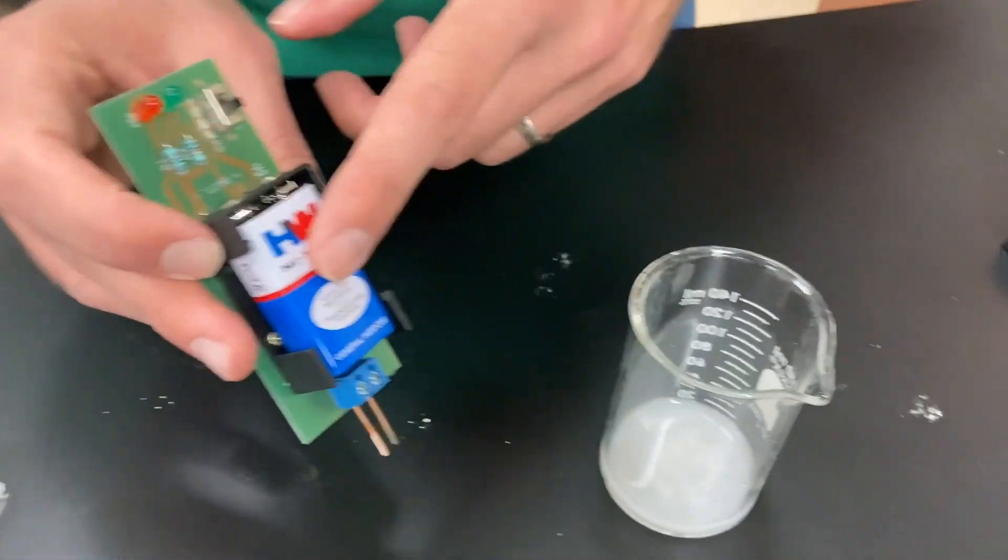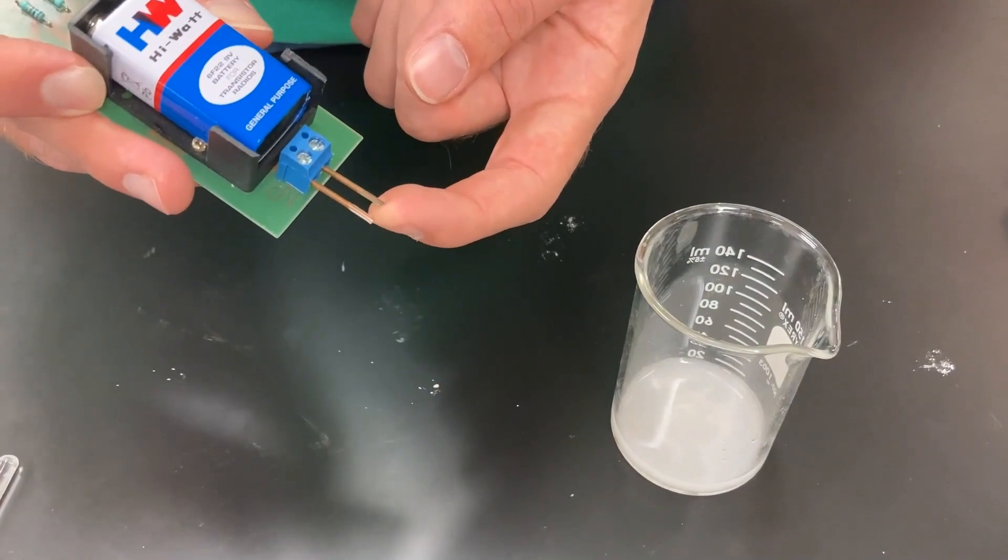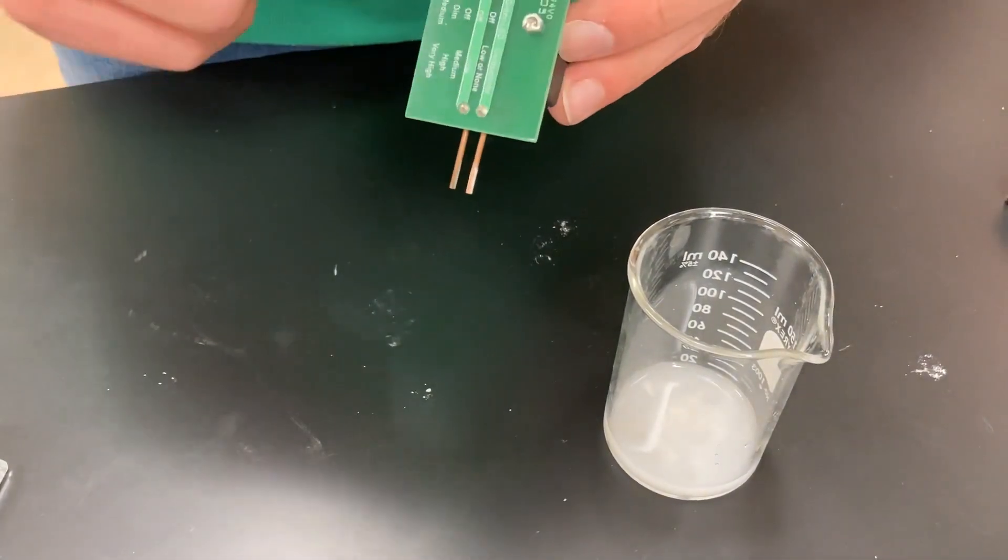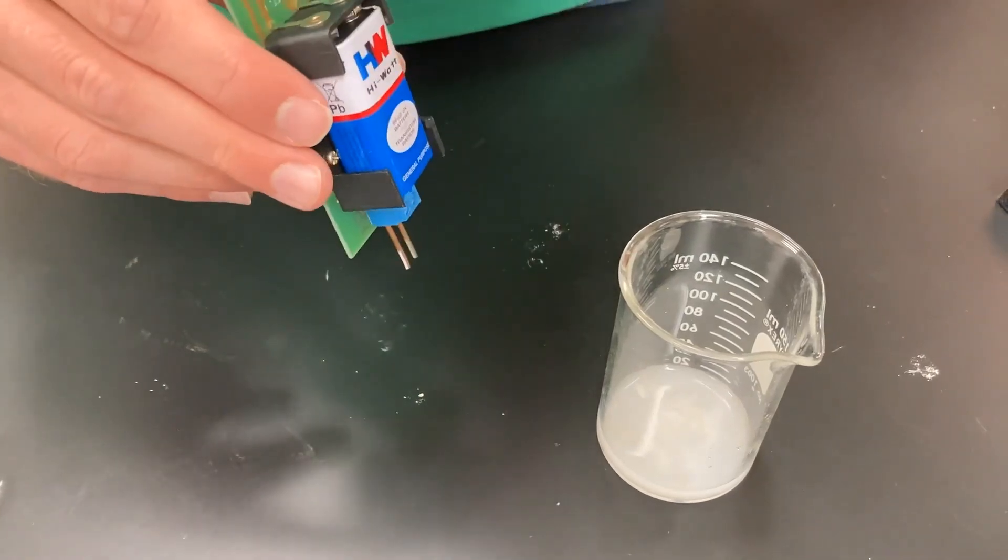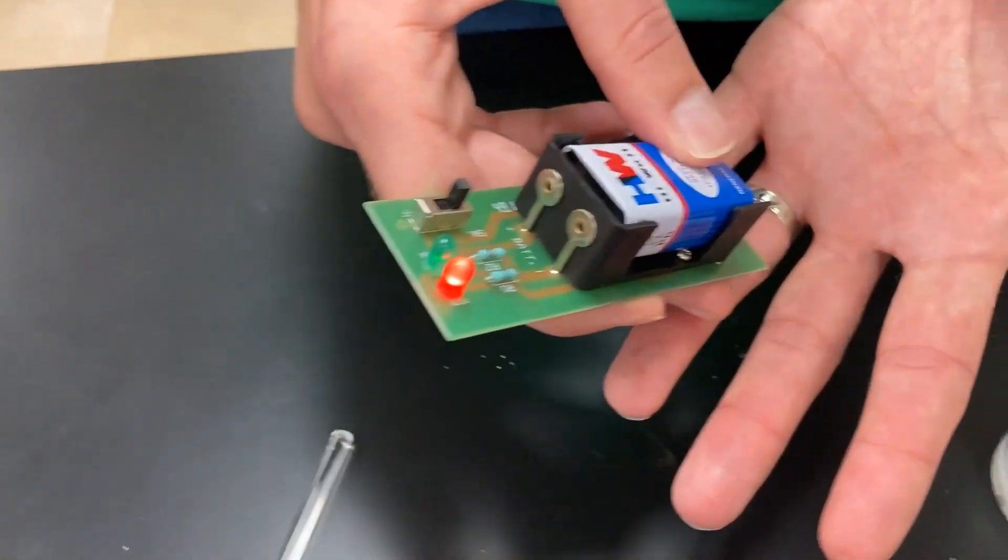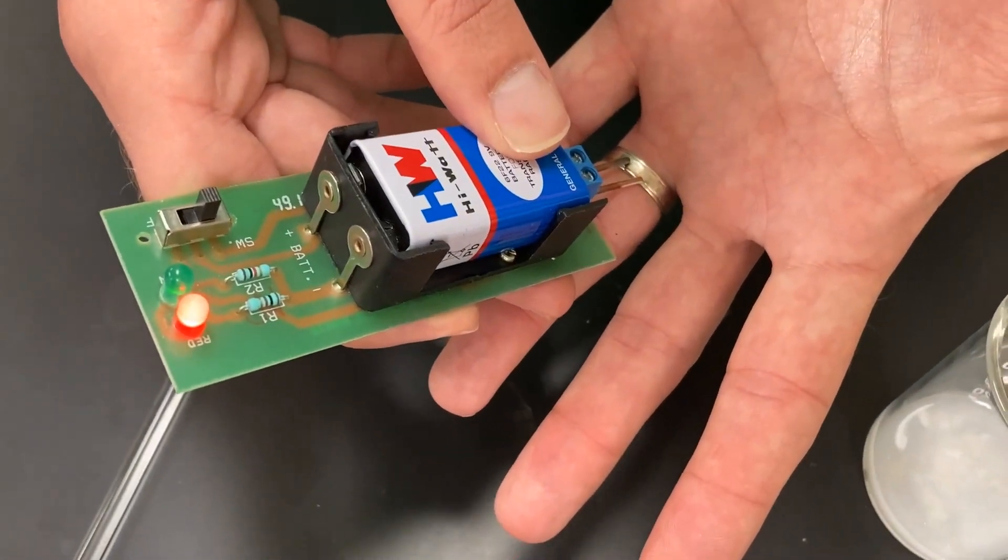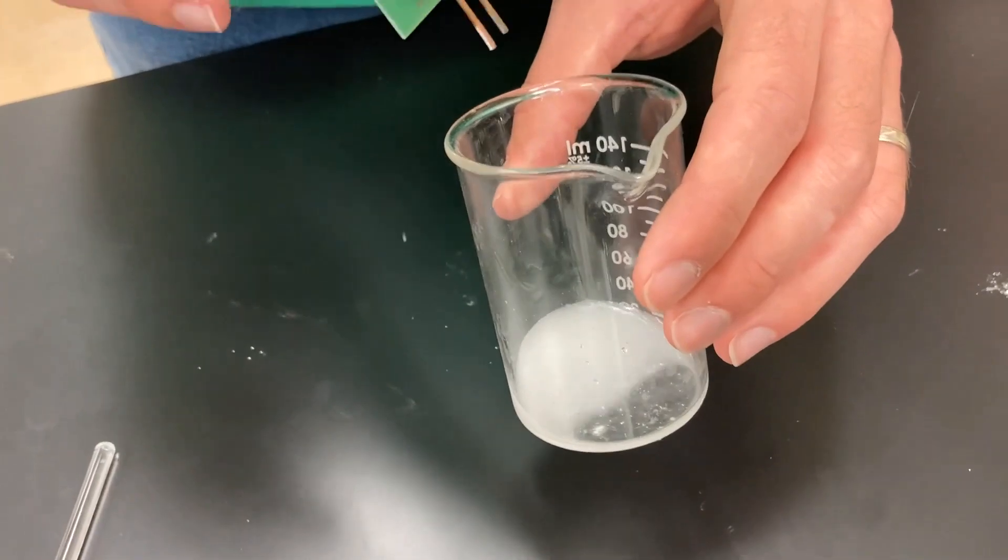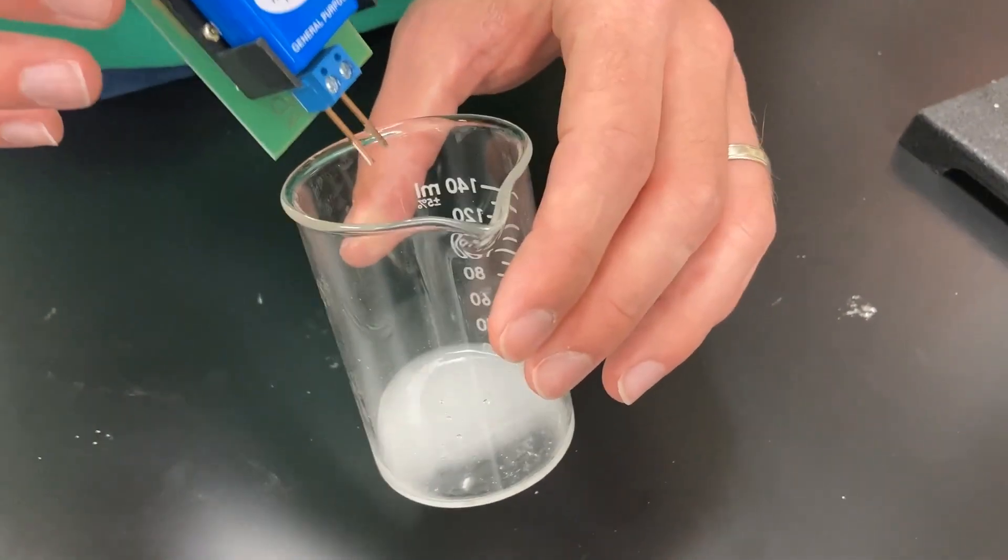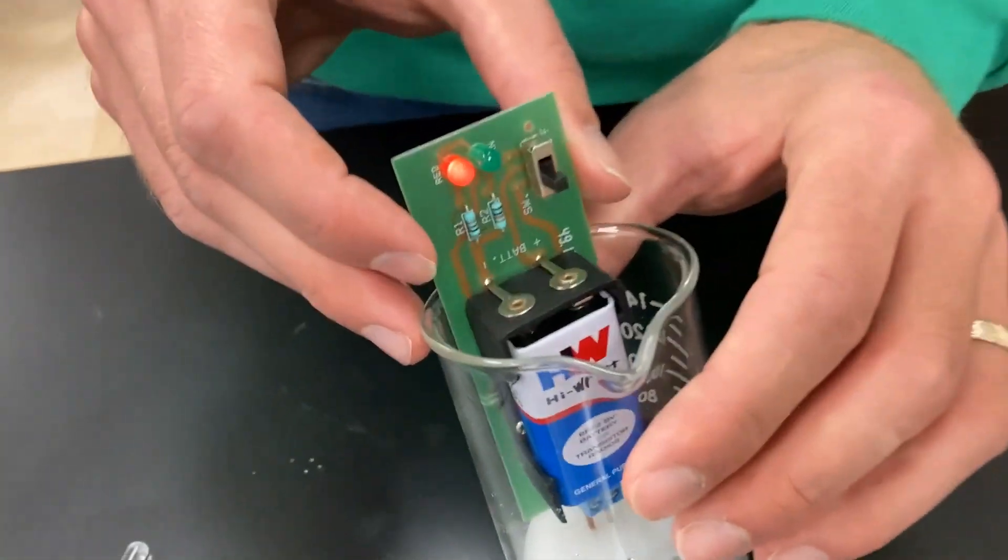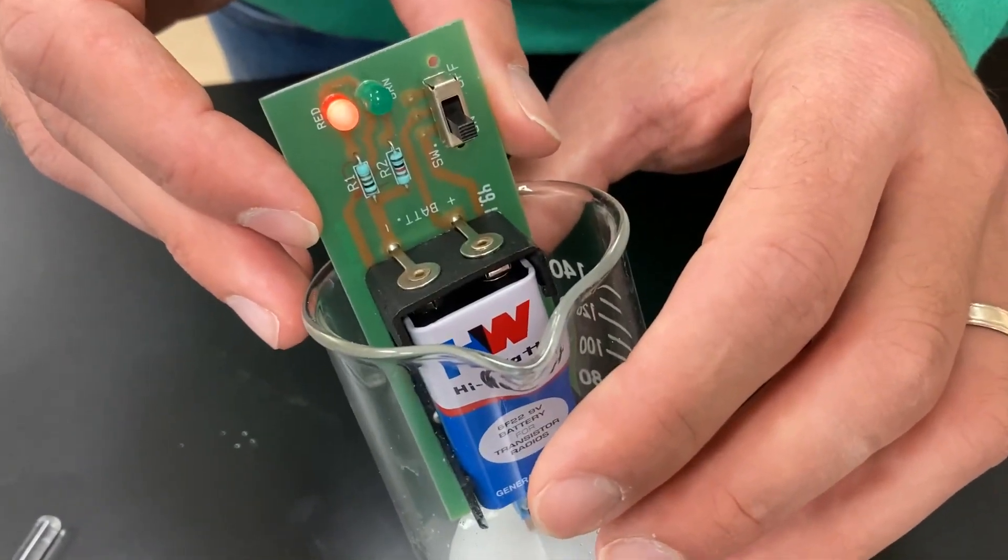These two metal prongs at the end, because they are apart, the circuit is not complete and therefore the light bulb does not light. But if I touch it to something that is electrically conductive, like my ring, the red light turns on here. So if I put the conductivity tester into our solution, our ionic products that should be electrolytes should turn the light on, just like we see here. Red light comes on whenever it's in solution.